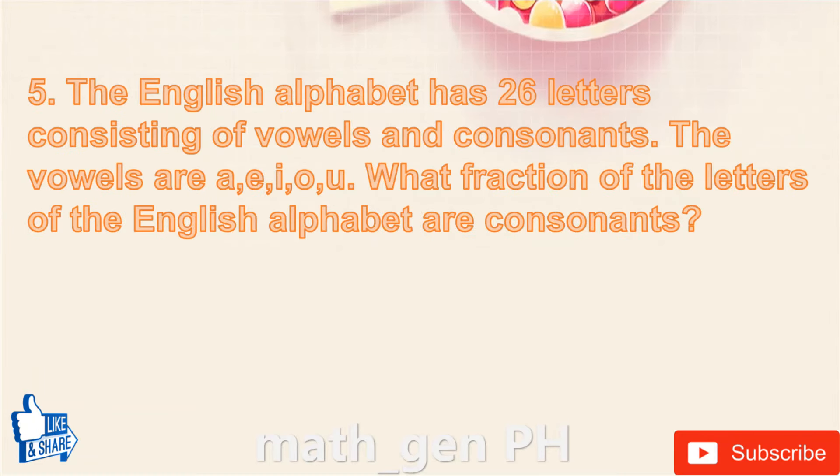Question number 5: The English alphabet has 26 letters consisting of vowels and consonants. The vowels are A, E, I, O, U. What fraction of the letters of the English alphabet are consonants?